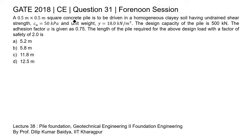In this question, a square concrete pile of cross section 0.5 meter by 0.5 meter is to be driven in a homogeneous clay soil. The soil properties are Cu equal to 50 kilo Pascal and unit weight gamma equal to 18 kilo Newton per meter cube. The adhesion factor alpha is given as 0.75, and we need to calculate the length of the pile for the design load with a factor of safety of 2. This question is from the topic of pile load capacity. You may study various methods to compute the ultimate load carrying capacity of pile by watching Lecture 38, Pile Foundation, Geotechnical Engineering 2, Foundation Engineering by Prof. Dilip Kumar, IIT Kharagpur.